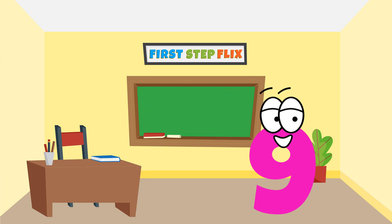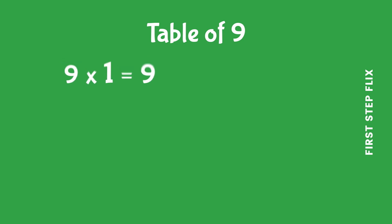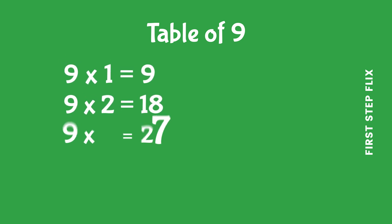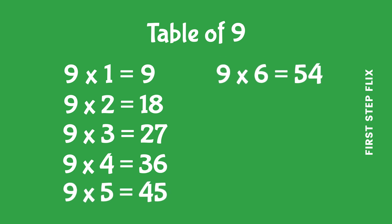Nine nines are eighty one. Nine tens are ninety. Let's repeat. Nine ones are nine. Nine twos are eighteen. Nine threes are twenty seven. Nine fours are thirty six. Nine fives are forty five. Nine sixes are fifty four.